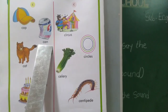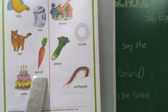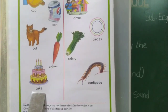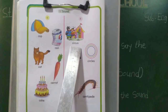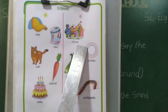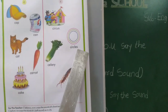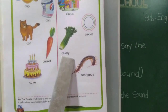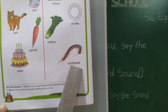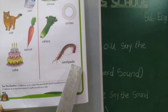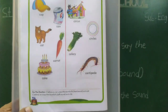Once again we read these words: C-A-P — cap, C-A-N — can, C-A-T — cat, C-A-R-R-O-T — carrot, C-A-K-E — cake. Next: C-I-R-C-U-S — circus, C-I-R-C-L-E — circle, C-E-L-E-R-Y — celery, C-E-N-T-I-P-E-D-E — centipede.